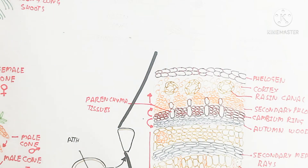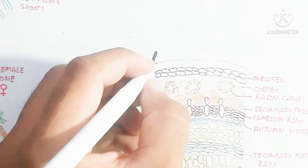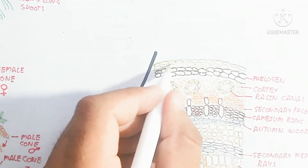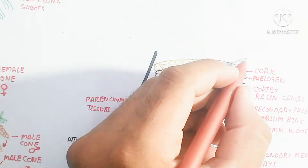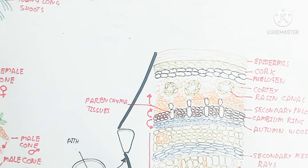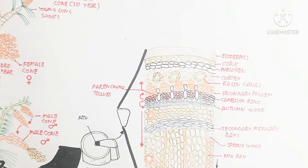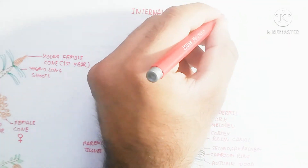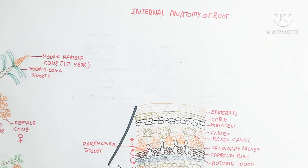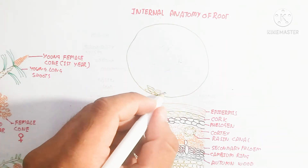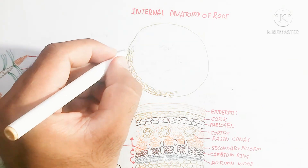Here is the resin canal. The cortex is made up of phloem and some dead tissue. The phellogen and cork are present in the cortex. The phellogen is an important part — it produces cork and epidermis. The epidermis is present in the outer side; cork cambium produces cork and phellogen produces the epidermis. Epidermis is made up of dead tissue and is protective against pathogens. The resin canal is also present.